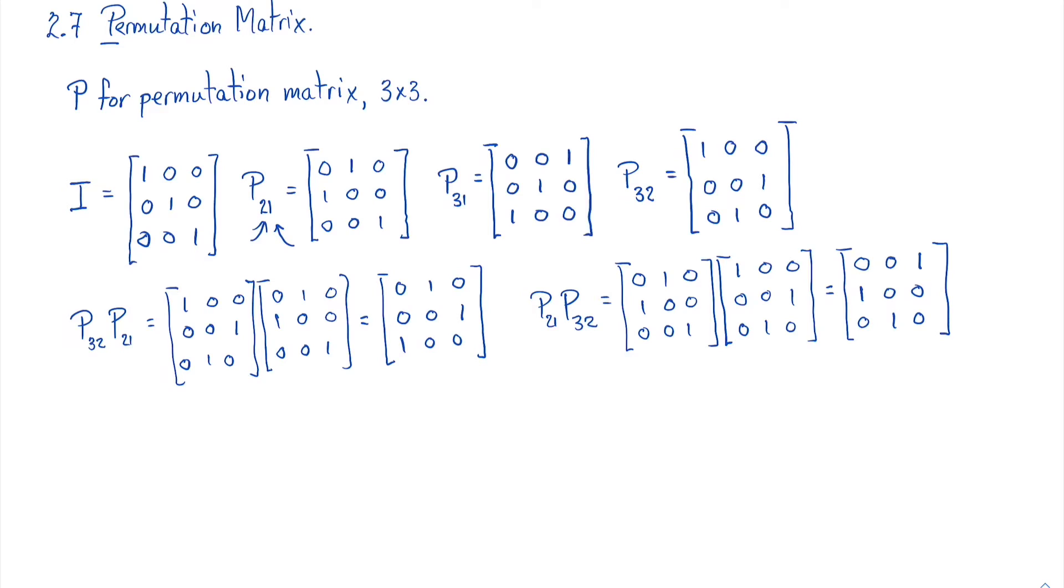And there we have it. There are our six permutation matrices. Now, it's kind of fun how it works, but let's actually apply this to something that we've been working on. For example, suppose I have the matrix A. And A is 0, 4, 5, 1, 2, 3, 0, 8, 9.